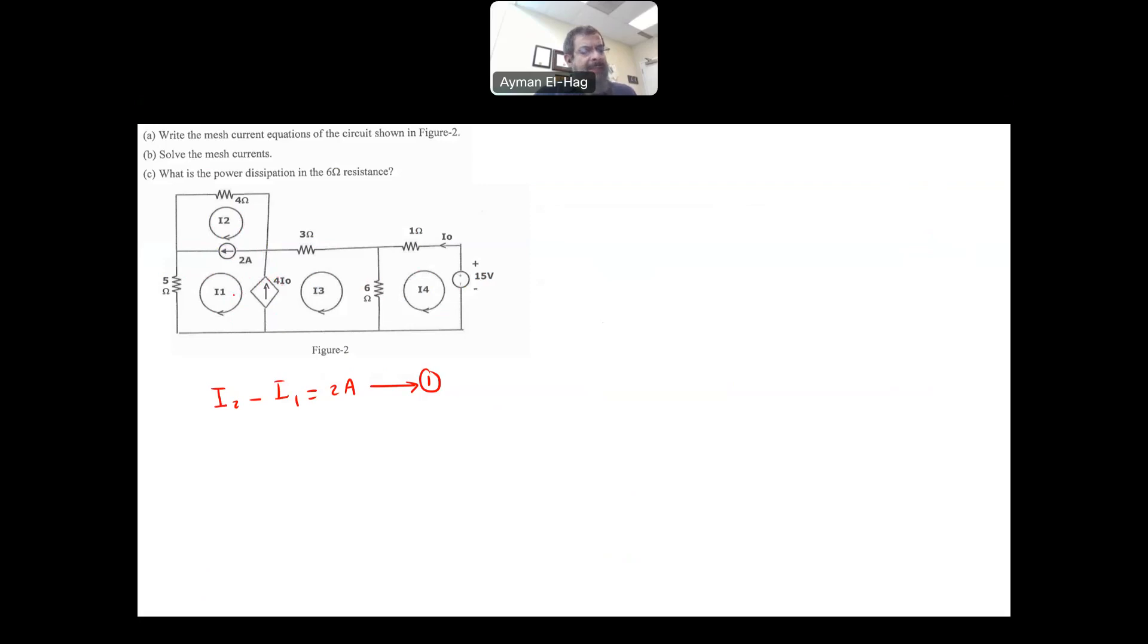We have here another current source between I1 and I3, but this is different. This is an independent current source, its value is fixed 2A. But this one is actually a dependent current source. 4I0 depends on this I0 in the circuit. 4I0 is in the direction of I3 and the opposite direction of I1. So I3 minus I1 is equal to 4I0.